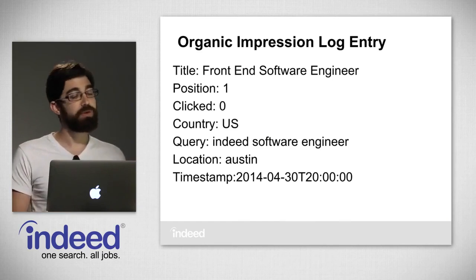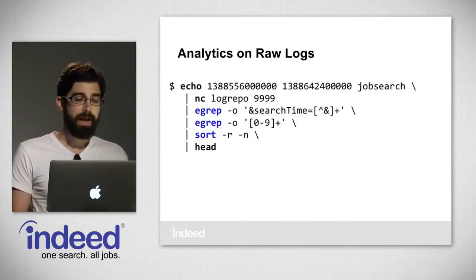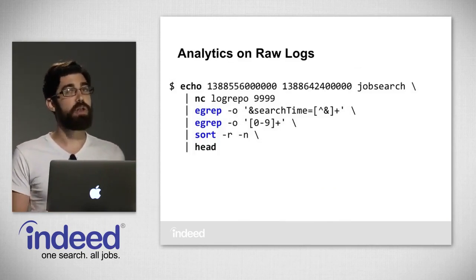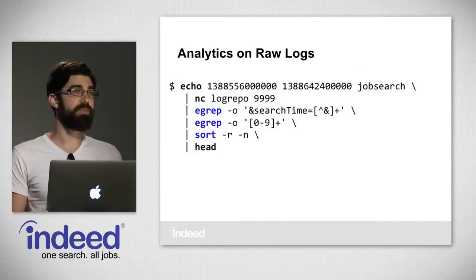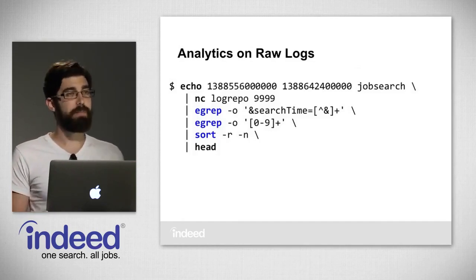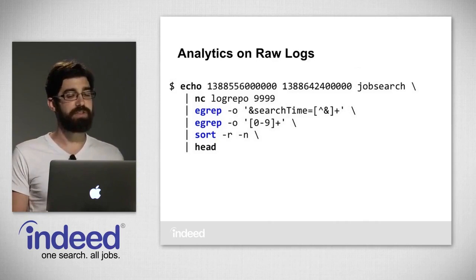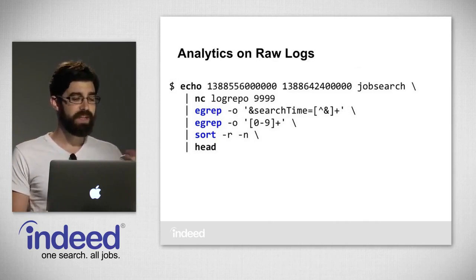We store the log information in something like an organic impression log entry. Here we have all the information about this impression: what is the title, the position, was it clicked or not, what country was it in, query, location, timestamp, and a bunch of other things. We take all these logs and store them in log repo. When we first started doing analytics at Indeed, we'd actually do analytics on these raw logs themselves — netcat and grep to identify which logs matched our query, and then add up the metrics around them.